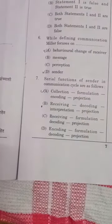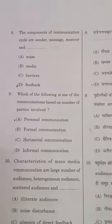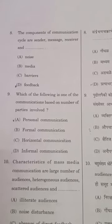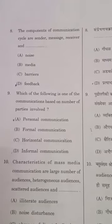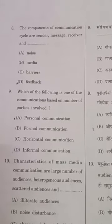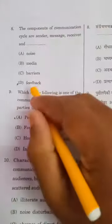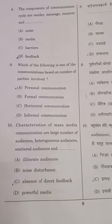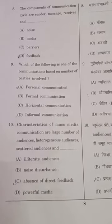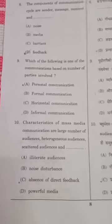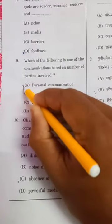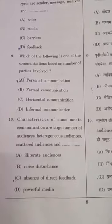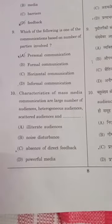Moving to the eighth question: the components of the communication cycle are sender, message, receiver, and feedback. Without feedback, the communication cycle cannot be completed, so option D is the right answer. In the ninth question — which of the following is one of the communications based on the number of parties — the answer is personal communication, which varies from person to person.